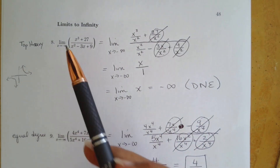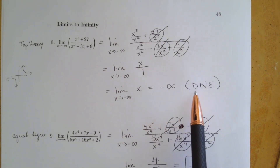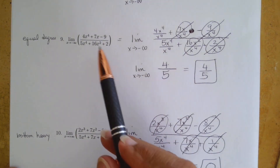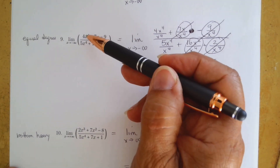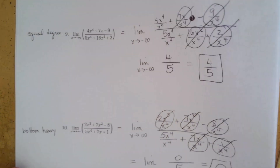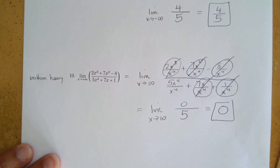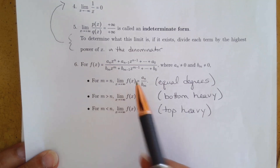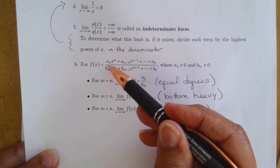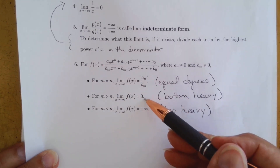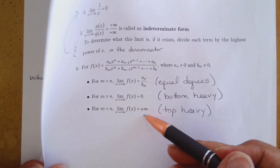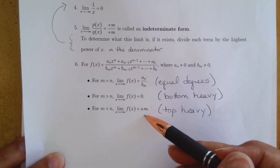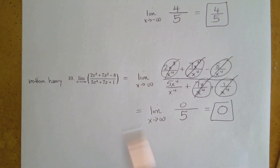Let's go back and look at what we did. Top heavy gave us plus or minus infinity, which does not exist. Equal degrees gave us 4/5, which is the ratio of the leading coefficients, 4 over 5. Bottom heavy gave us zero. Go back to the page with the rules — for equal degrees you take the leading coefficients and divide them; for bottom heavy you get zero; for top heavy you get plus or minus infinity. If you remember that, you don't need to go through all this work unless you're asked to show your steps.